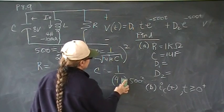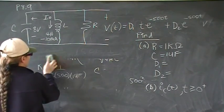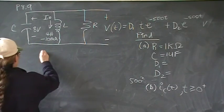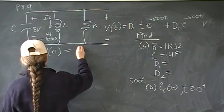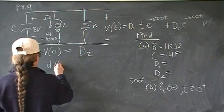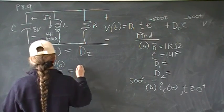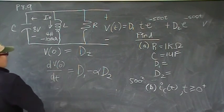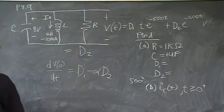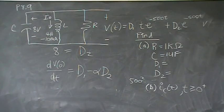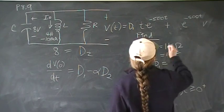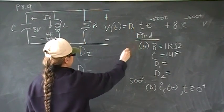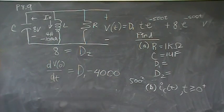So now we need to find D1 and D2 for part A. The coefficient equations for a critically damped response are: V(0) is equal to D2, and dV/dt is equal to D1 minus alpha D2. These are the two coefficient equations that we have. This one right away we know, because we were given that at the very beginning of the problem. The voltage at time 0 is 8 volts. So now we have alpha and D2. Alpha, remember, is 500. D2 is 8, and so this is going to be 4,000.